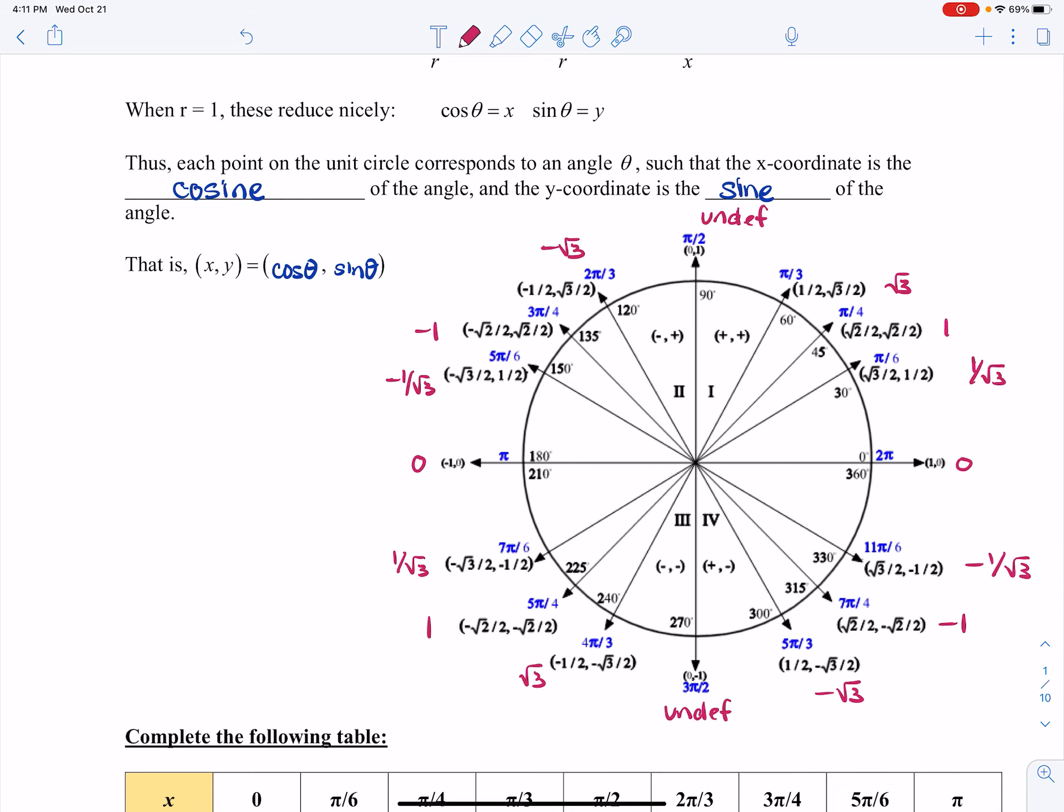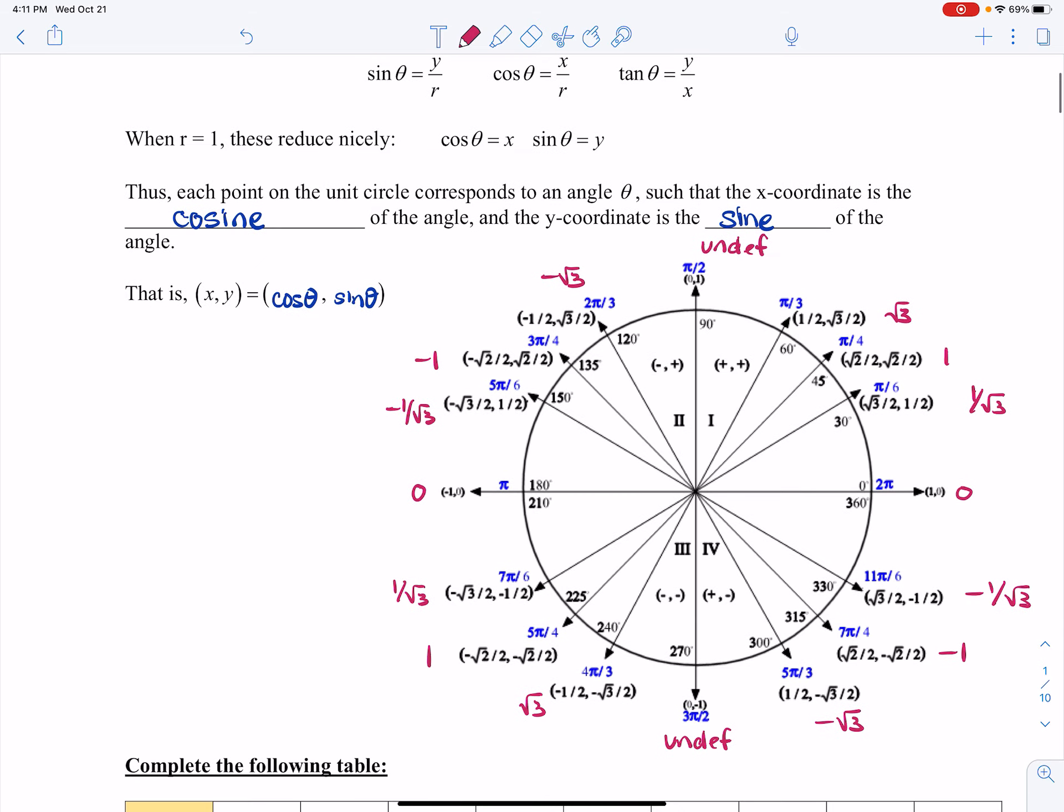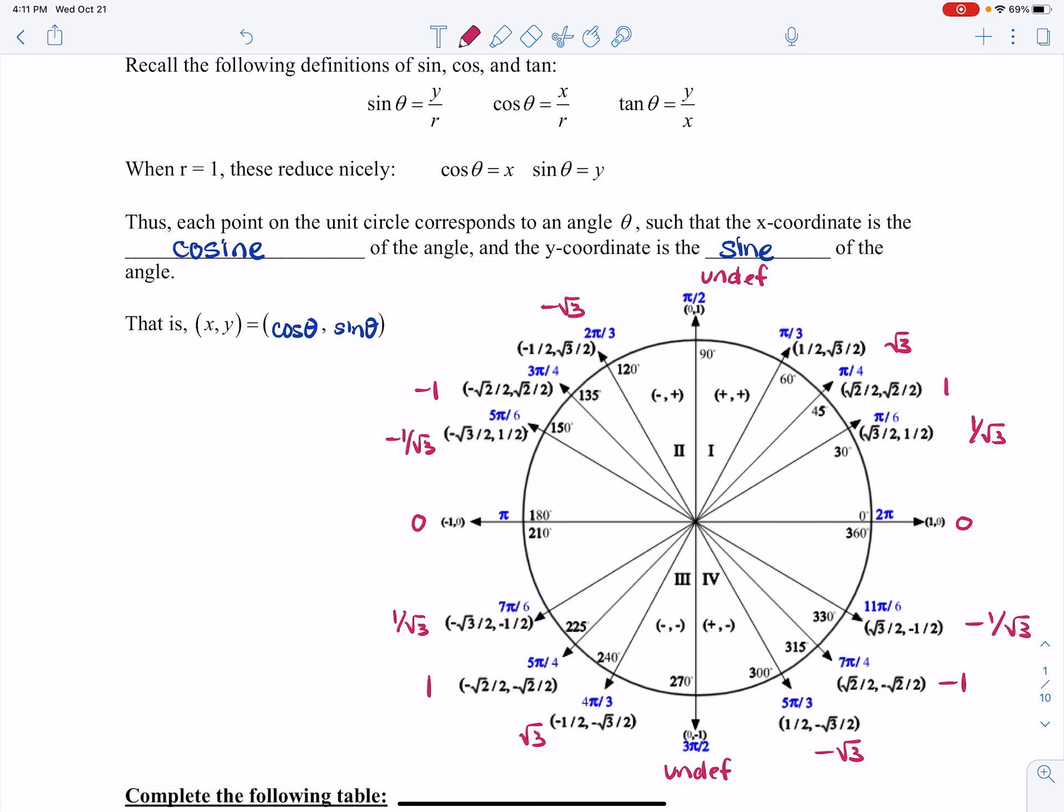So what I have for you here is a unit circle, and just to remember the definitions of sine, cosine, and tangent, at the top of the page here, we know that sine of theta is y over r, we know cosine theta is x over r, and we know tangent theta is y over x.